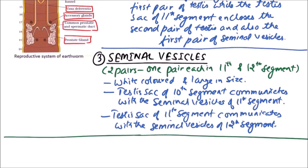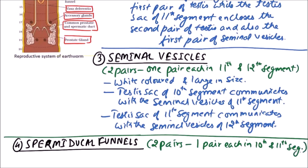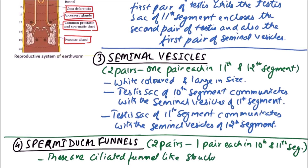The next structures related to reproduction are spermiducal funnels. Spermiducal funnels are also two pairs, one pair each in the 10th and 11th segments. These are ciliated funnel-like structures located inside the testis sac.